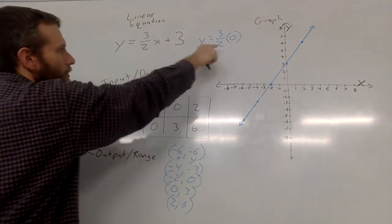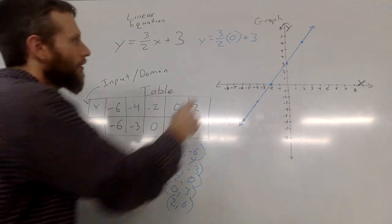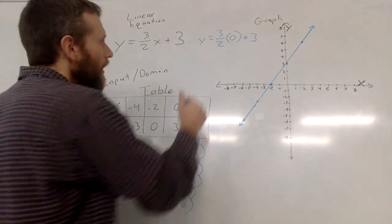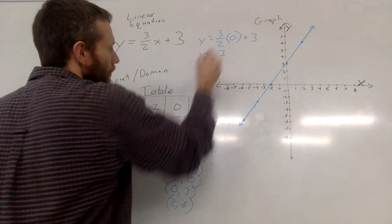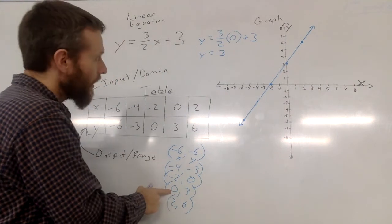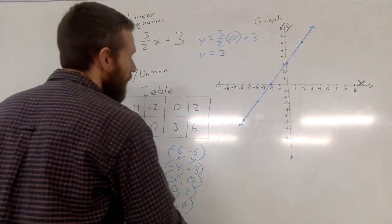You see how I replaced the x with the 0? And then now if I solve this, I will get 0 times 3 halves is 0, and I'm left with y equals 3. And that's why this coordinate is 0, 3. If x is 0 and we solve it, y will become 3.